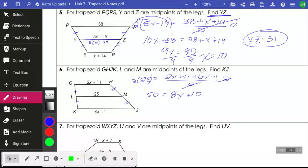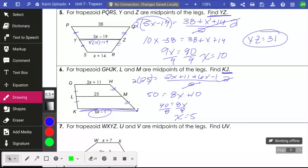All right. I'm going to minus 10 from both sides. So I get 40 is equal to 8X. And I'm going to divide both sides by 8 so that X is equal to 5. But I need to find KJ. And KJ is this segment here, which is 6X minus 1. So I'm going to do 6 times 5 minus 1, which is 30 minus 1. So KJ is equal to 29.